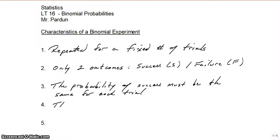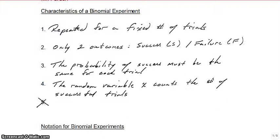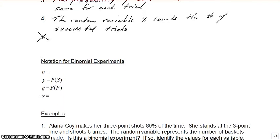Fourth, the random variable X counts the number of successful trials. Those are the four characteristics of a binomial experiment.